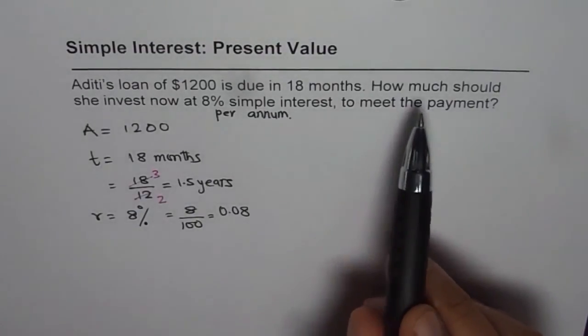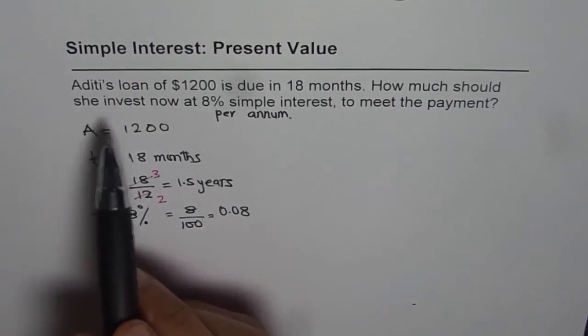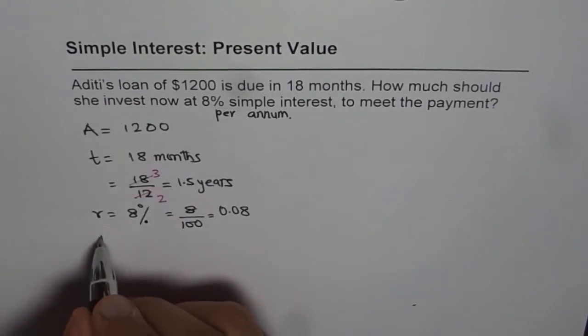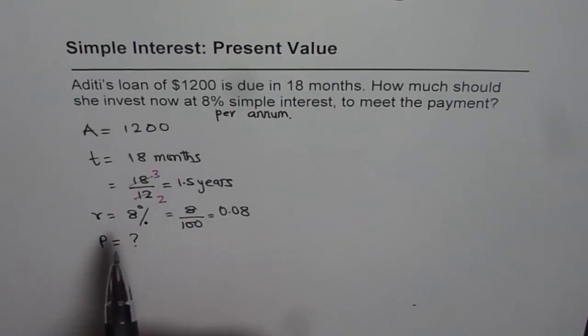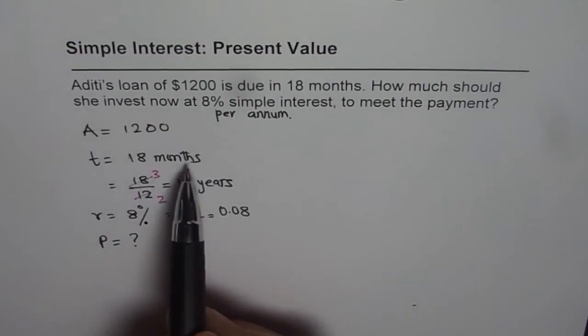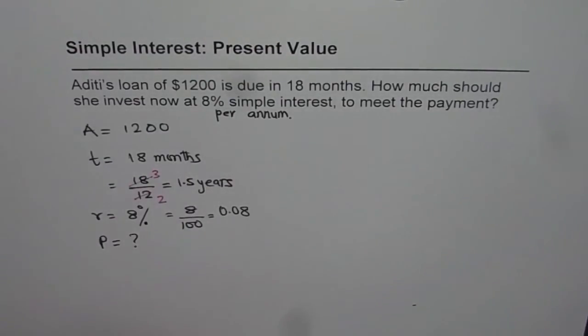Now we need to find how much should she invest now. That means principal amount which needs to be invested now, so that after 18 months, we have $1200 for Aditi. So this is what the calculation is to be done.